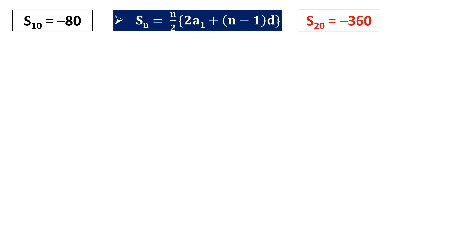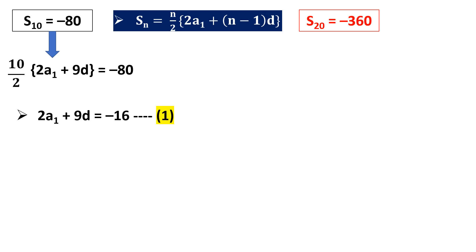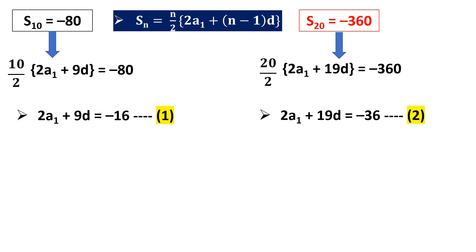Using the sum formula for both equations: from S10 = −80, we get (10/2)×[2a1 + 9d] = −80, which simplifies to 2a1 + 9d = −16 (Equation 1). From S20 = −360, we get (20/2)×[2a1 + 19d] = −360, which simplifies to 2a1 + 19d = −36 (Equation 2).